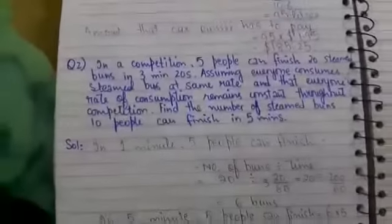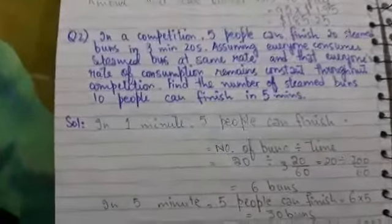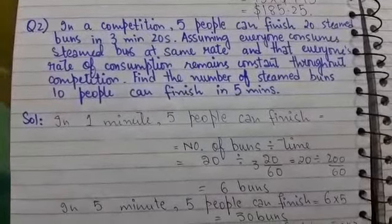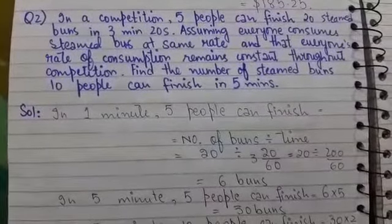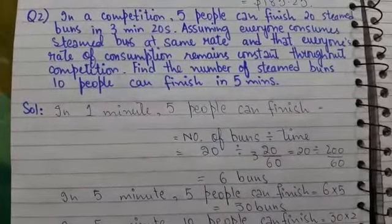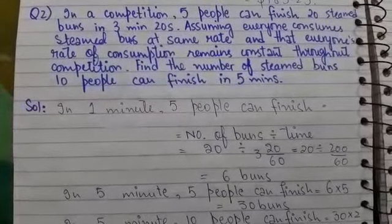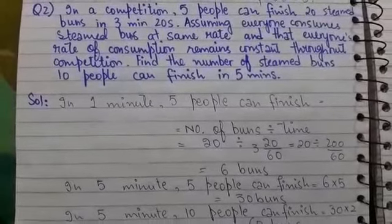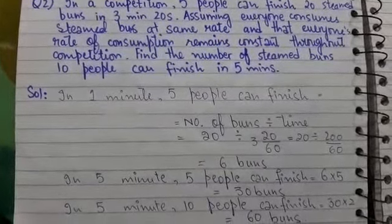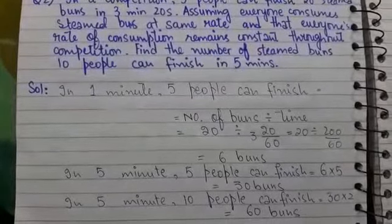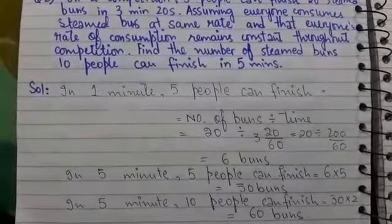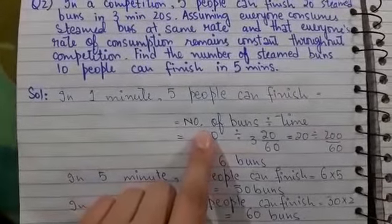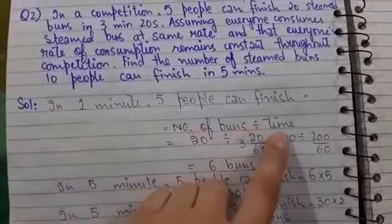Now moving toward our second question of this practice. In a competition, 5 people can finish 20 steamed buns in 3 minutes 20 seconds. Assuming everyone consumes steamed buns at the same rate and that everyone's rate of consumption remains constant throughout the competition, find the number of steamed buns 10 people can finish in 5 minutes. Firstly, we will find how many steamed buns 5 people can finish in 1 minute. We will use this formula: number of buns divided by time.